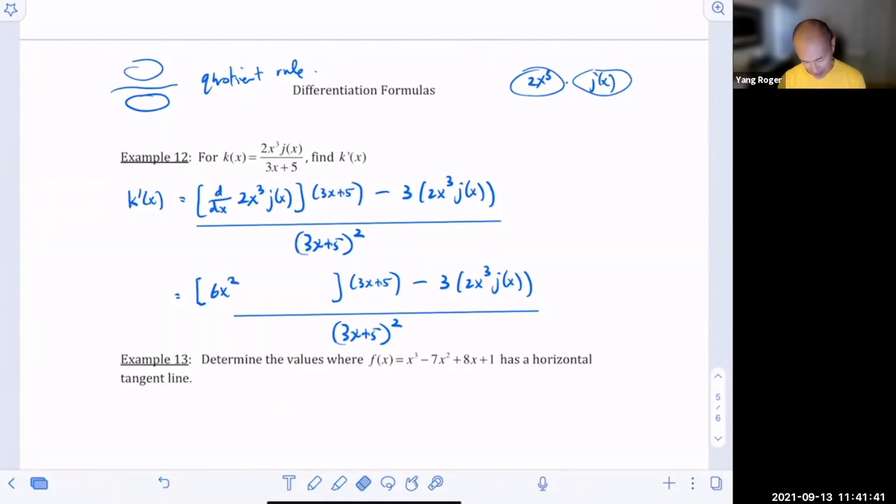And then I got to keep the second thing, which is j of x. You got to take the derivative of the second thing, which is j prime of x. And I keep the first thing, which is 2x cubed. So, this right here is your final answer.